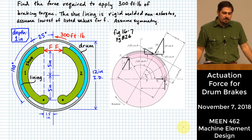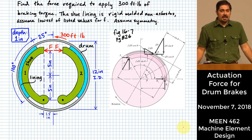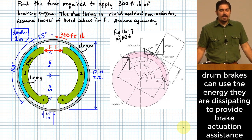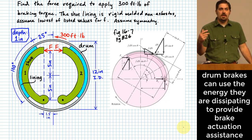One item that is a little bit harder to deal with in this chapter is the topic of drum brakes. The reason drum brakes are a little bit harder to deal with is due to one of the characteristics that they've got that can be used to your advantage — something that the book refers to as self-energization or self-de-energization.